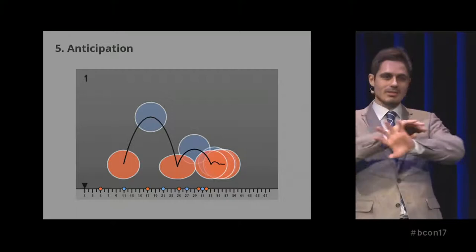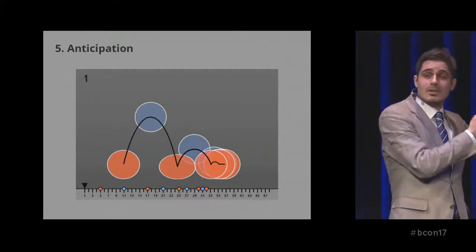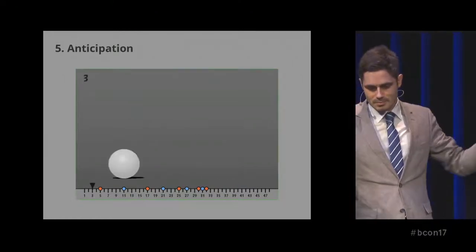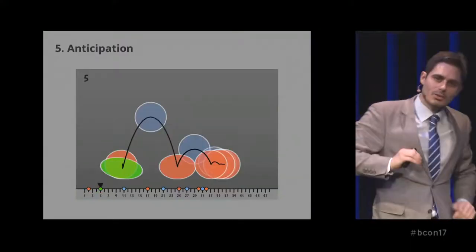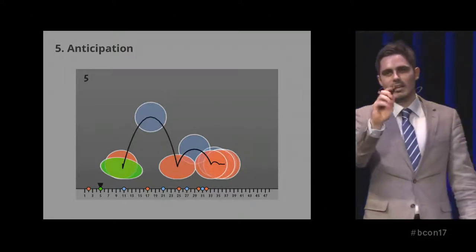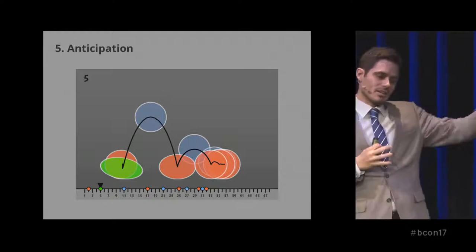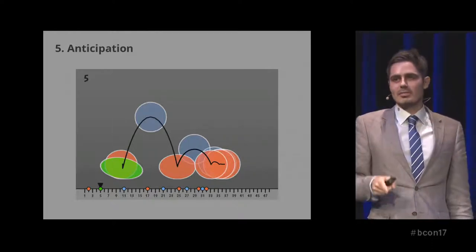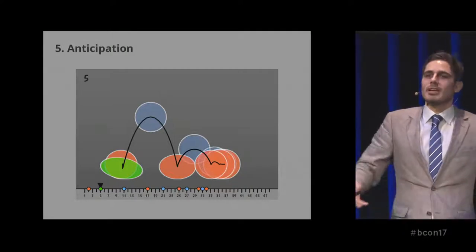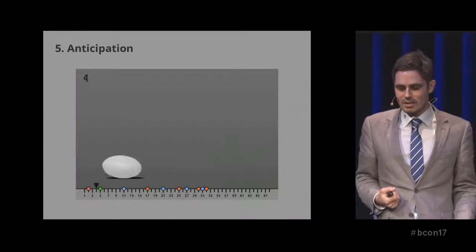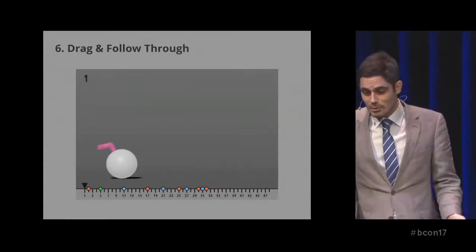Next topic: anticipation. If a ball starts from the ground going up with no preparation, it looks like somebody just kicked it — the energy came out of nowhere. So we squash it down first, then launch it. This is all about winding up: if I want to throw something, I go back first, then throw. It's like coiling a spring and then releasing it. This gives inanimate objects agency — a ball that anticipates its jump suddenly seems like it wanted to jump.